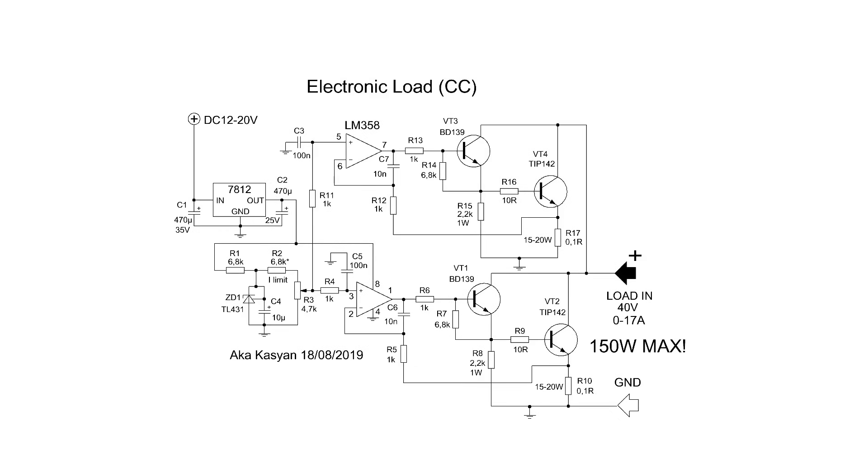The heart of the circuit is a dual operational amplifier chip, the LM358. Each channel controls its own power transistor. A separate power source with a voltage from 12 to 20 volts is needed for the control circuit. Maximum 24 volts.